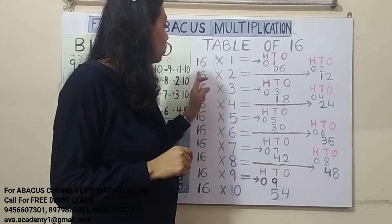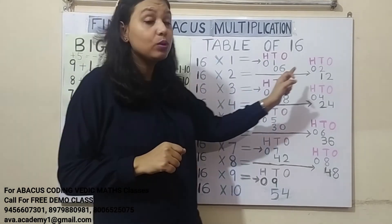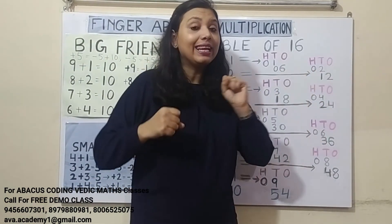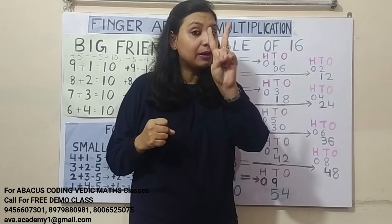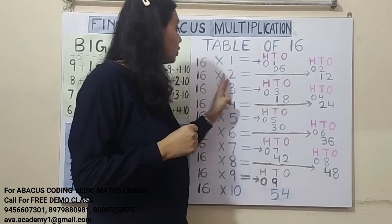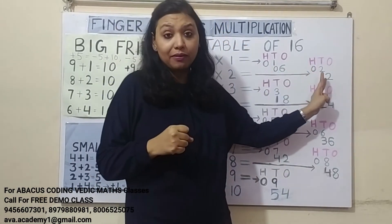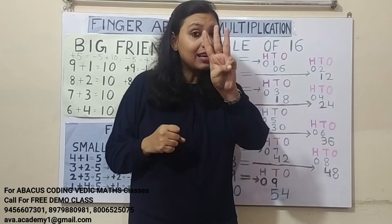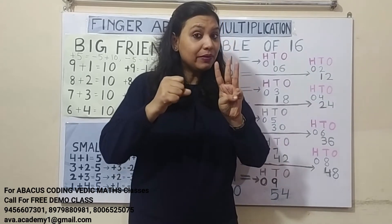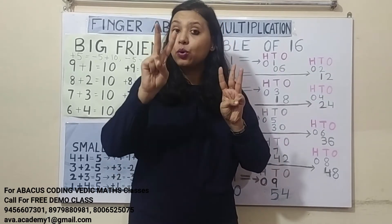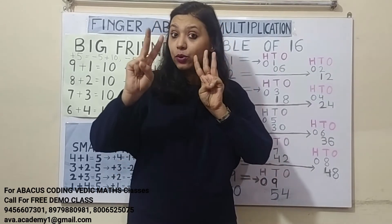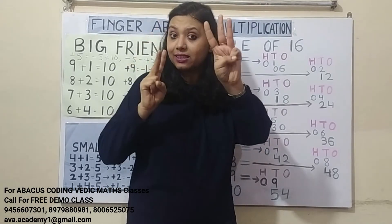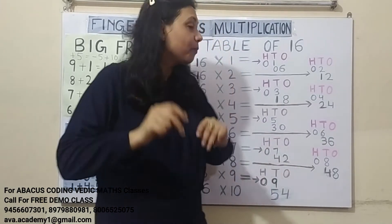16 into 2: 1 two's are 2 — in 100's we represent 0, in 10's we represent 2. 6 two's are 12 — in 10's we represent 1, and in 1's we represent 2. The answer is 32.